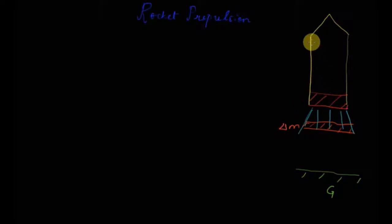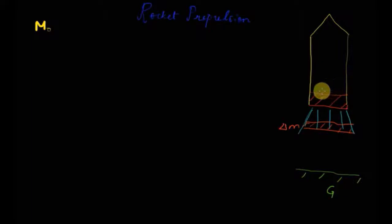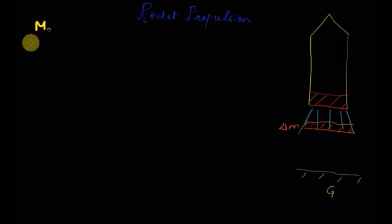Let's say we have this rocket over here and the initial mass of the rocket is m0. Obviously, fuel is filled in the rocket and the fuel gets ignited. After ignition, the gases come out and because of which the rocket moves up. Let's say the gases come out of the rocket at the rate of r, which is dm/dt. So mass comes out of the rocket at the rate of dm/dt.